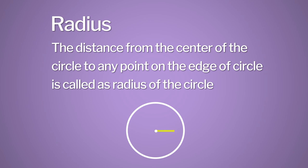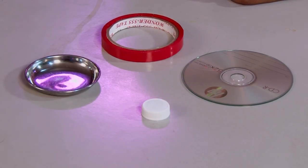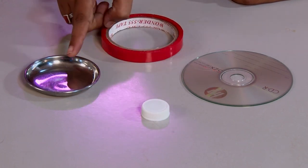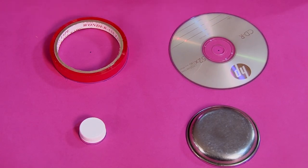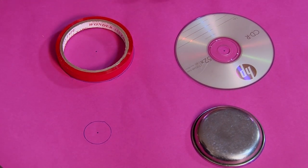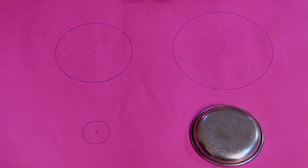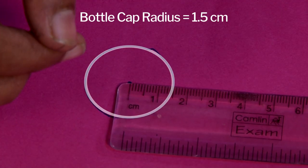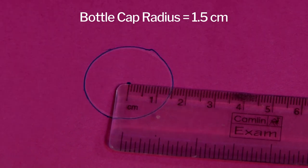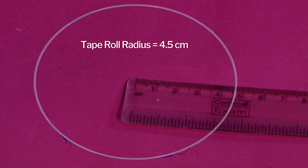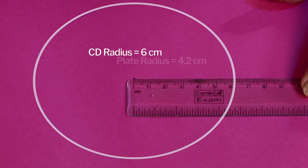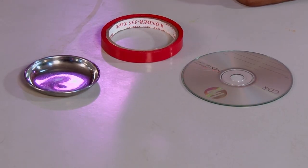The distance from the centre of the circle to any point on the edge of the circle is called the radius of the circle. I have collected different circular objects from the surroundings like a bottle cap, small plate, cello tape, and CD. The size of the circle is dependent upon its radius. We can see that the bigger the radius, the bigger the circle. The bottle cap has the smallest radius and is the smallest, while the CD has the largest radius and hence is the largest.